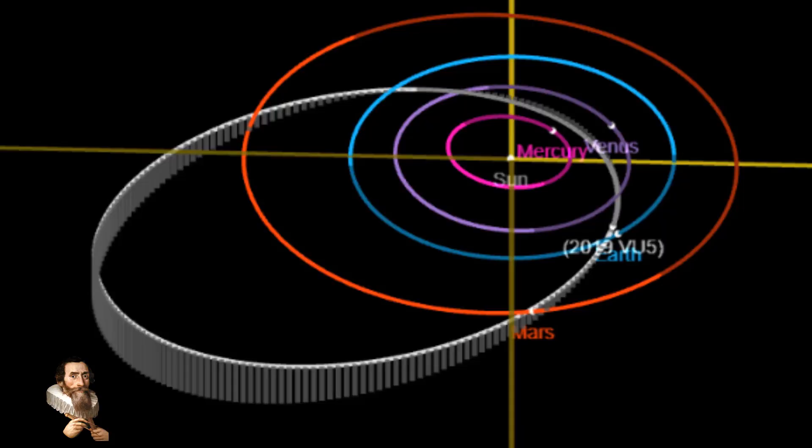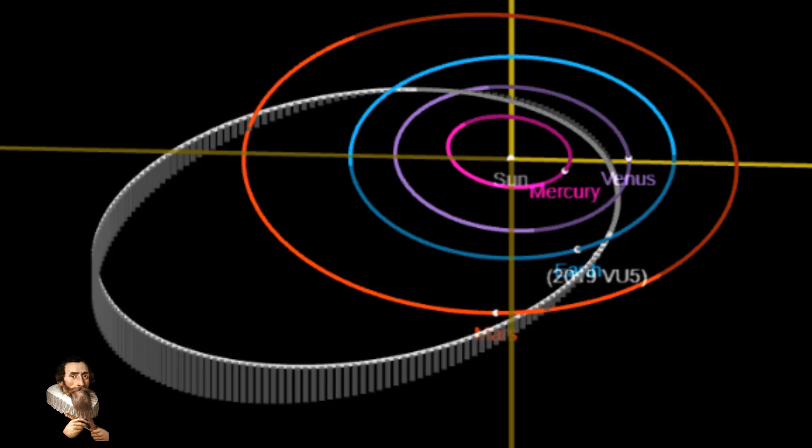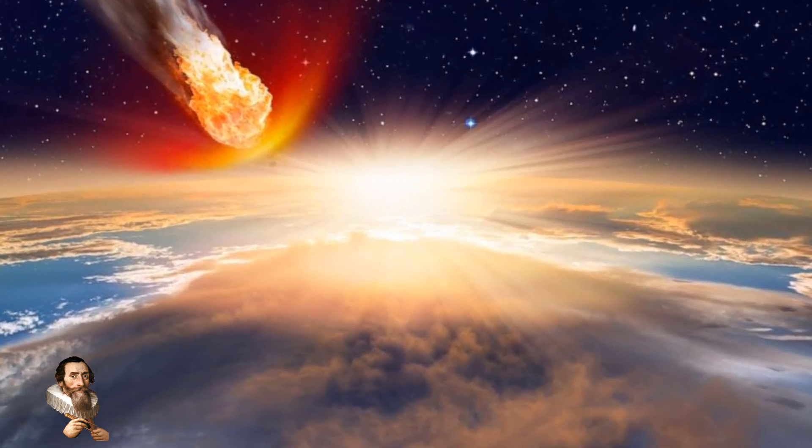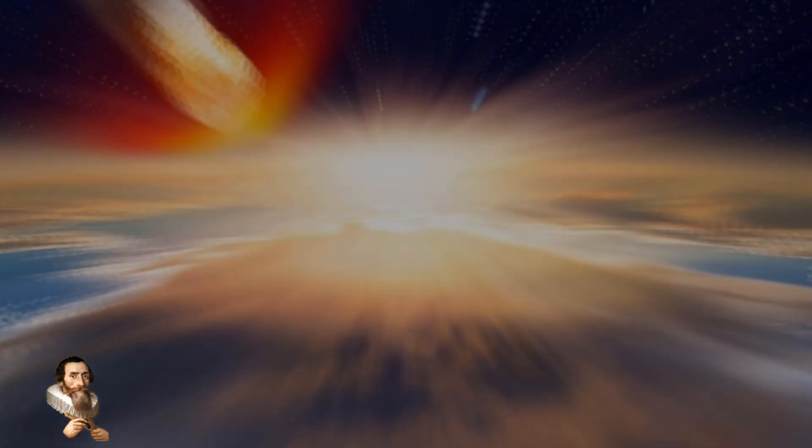Oh, and this asteroid that is passing tonight at a distance of over 3 million miles, NASA say that this is unusually close, yet they refuse to comment on the close approach of Apophis, which will take place in 5 years time. What's that all about?